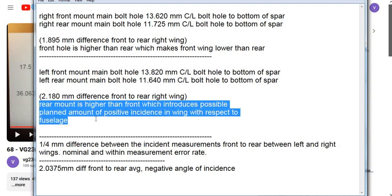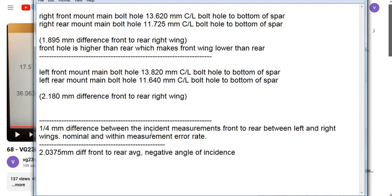This is wrong, that's an old note. On average between the two wings, 2.0375 millimeter difference between the front and rear, and that results in a negative angle of incidence, not positive.